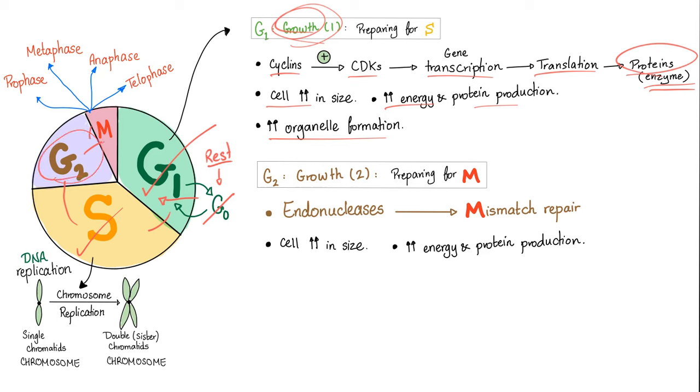Let's talk about G2. G2 is the same freaking thing. G2, you have the endonuclease. And this will help us with the mismatch repair. What does that mean? We repair the mismatch. No, duh. The cell increases in size and increase energy and protein production. Do not get confused. G2 is preparing for the ultimate phase, the M phase, the mitosis phase, which is subdivided into prophase, metaphase, anaphase, and telophase.